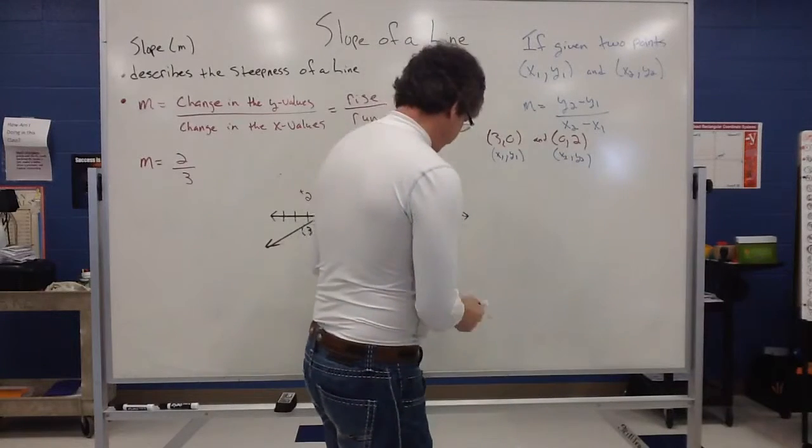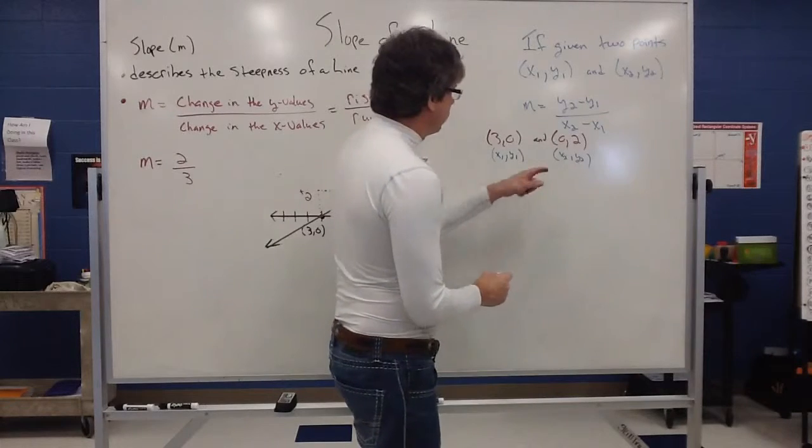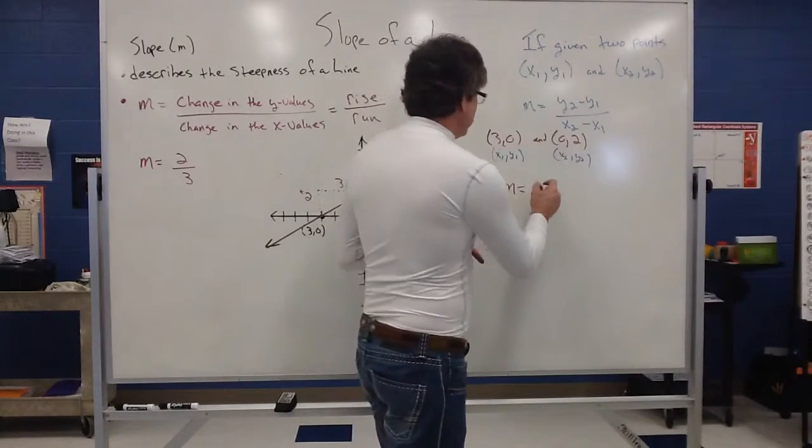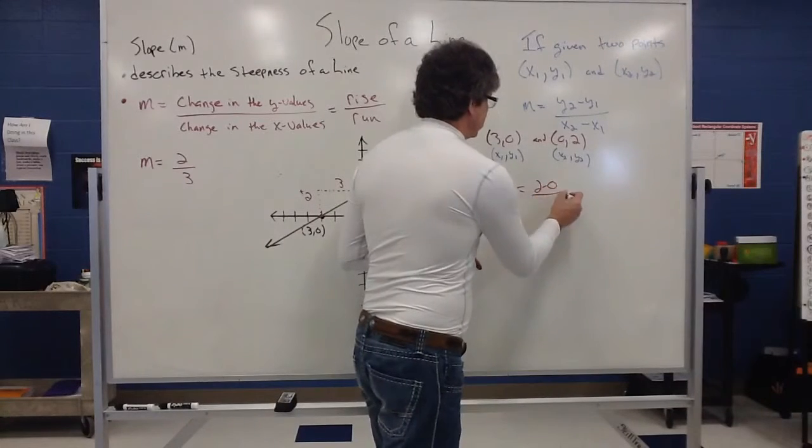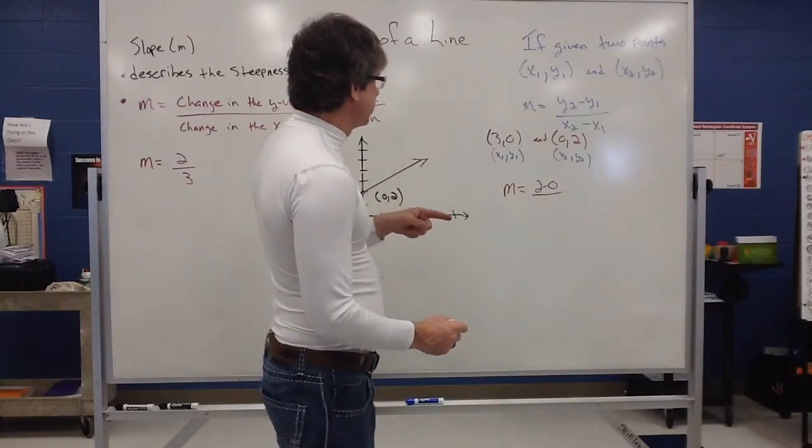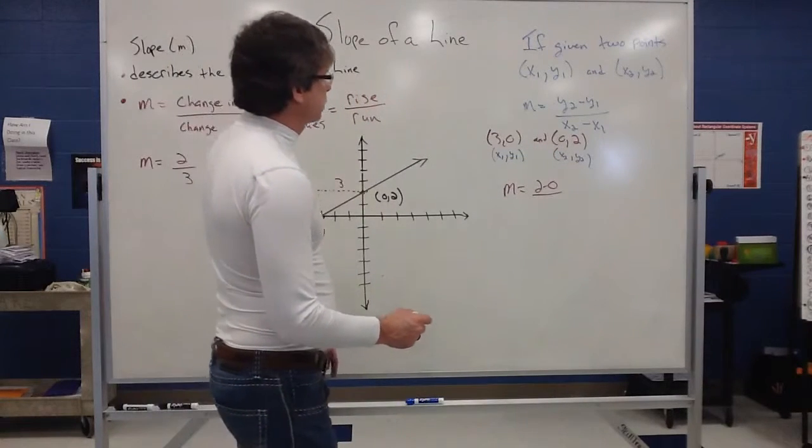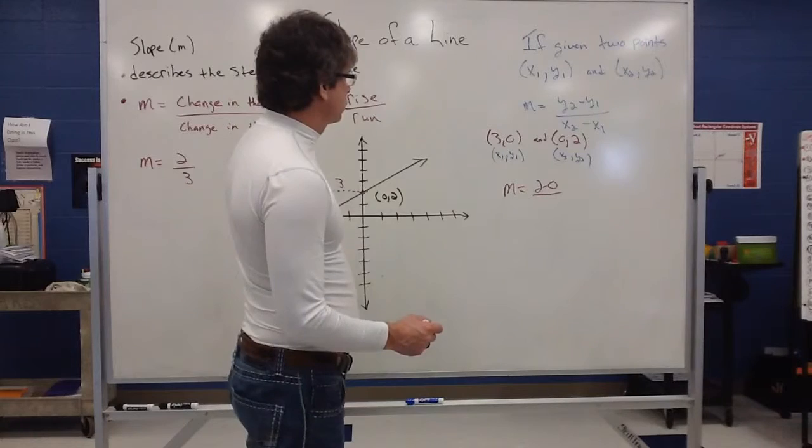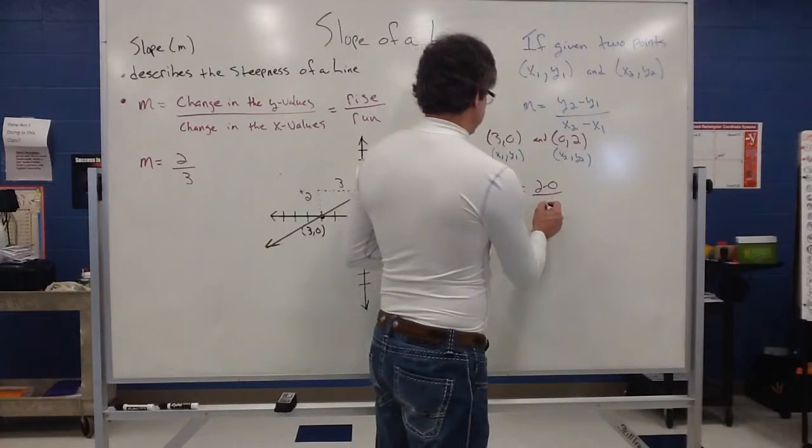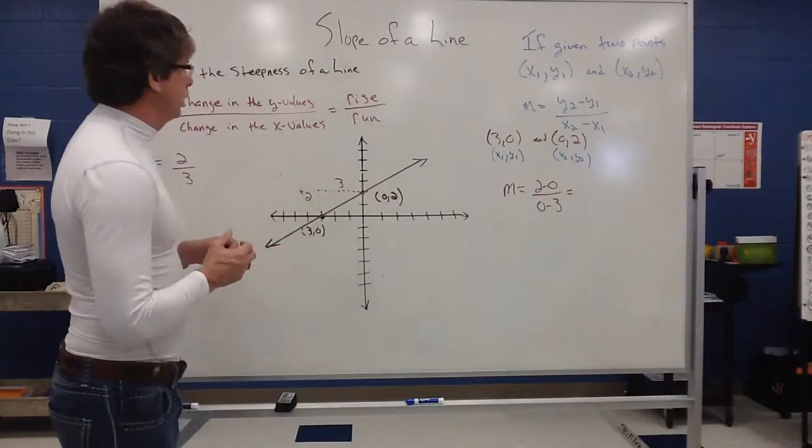So, in my formula, my slope can be calculated as y2 minus y1, so two minus zero, and on the bottom, I should have zero, I'm sorry, x2 minus x1, so zero minus three. Let's see here, something's not quite right.